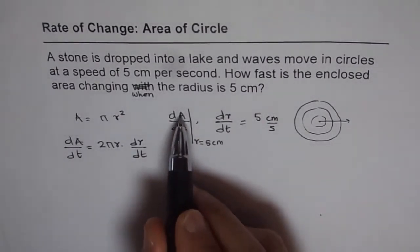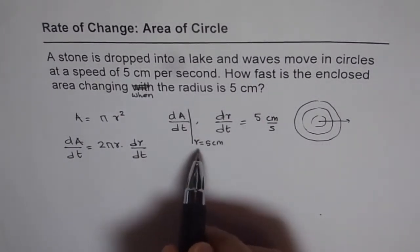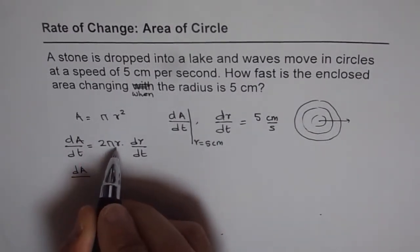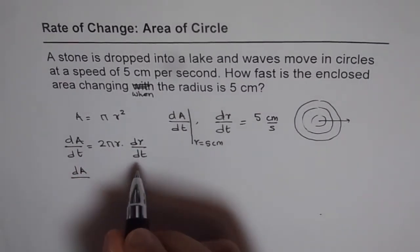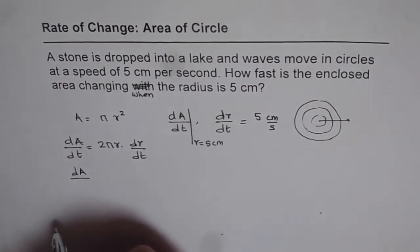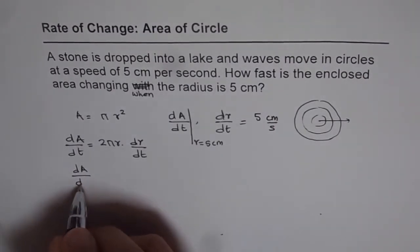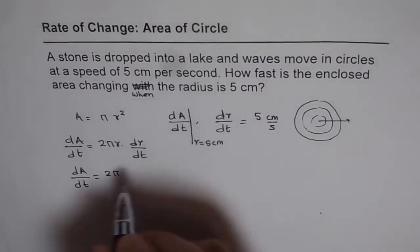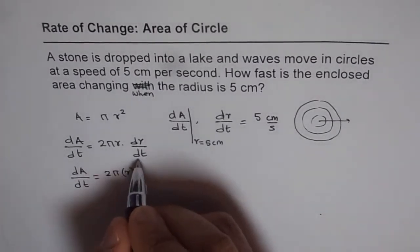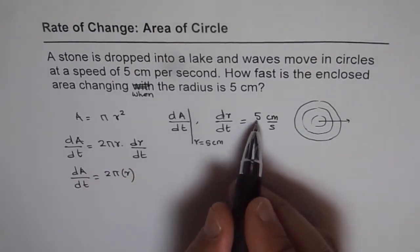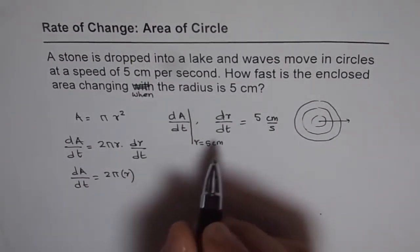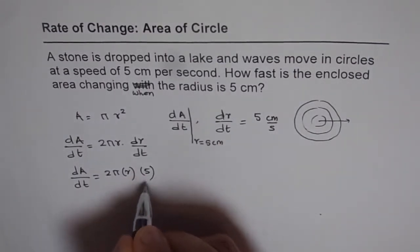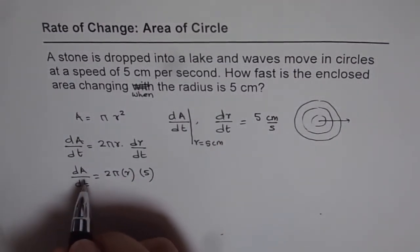Now since we want to find what is the change in area when radius is 5, we can also place the value of r here as 5 and dr/dt as 5 cm per second and get our answer.